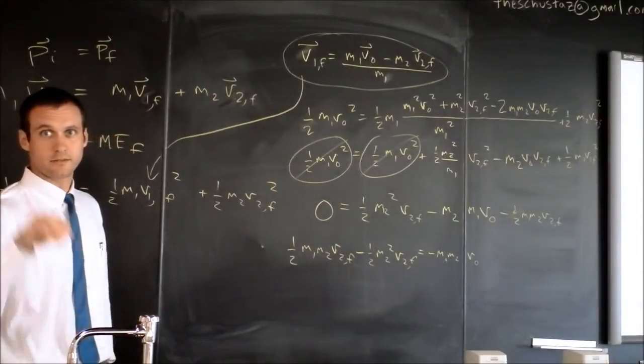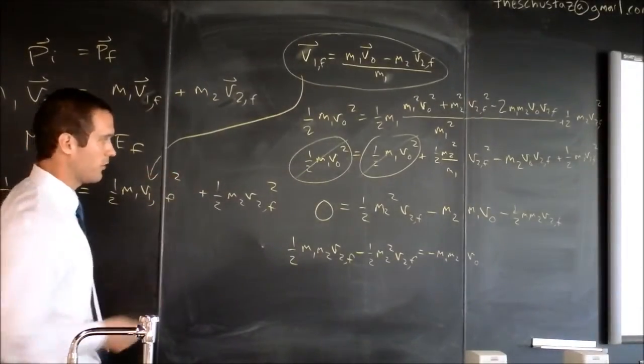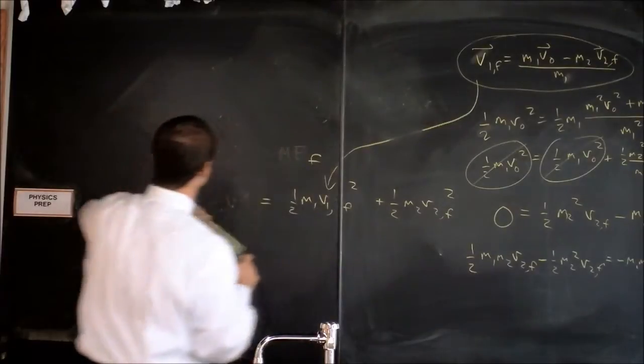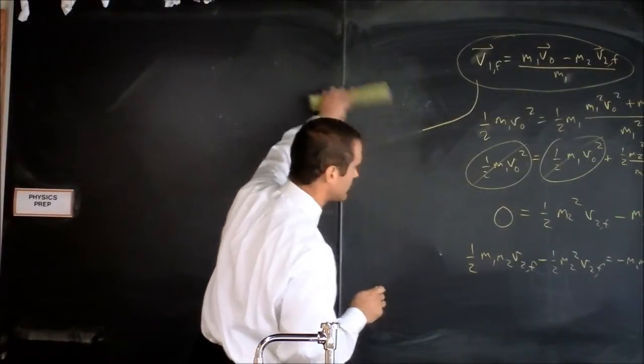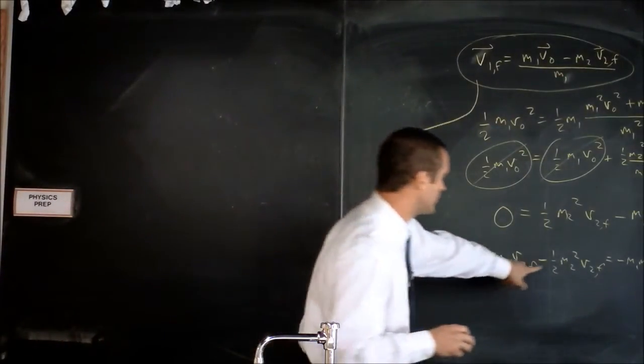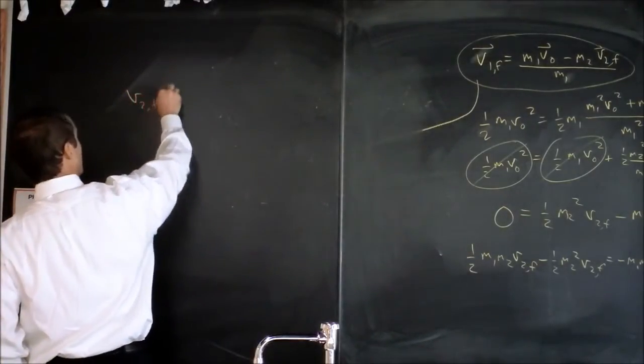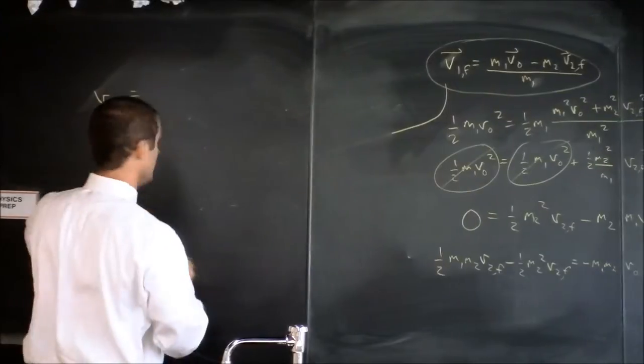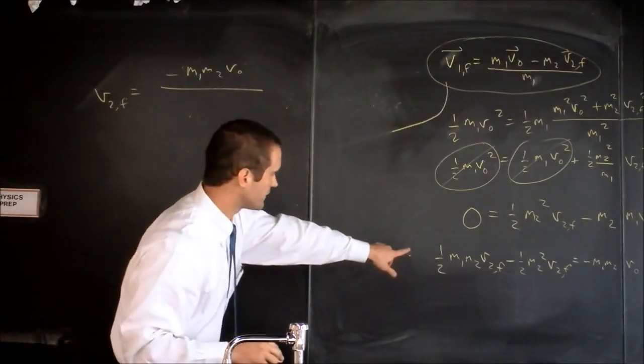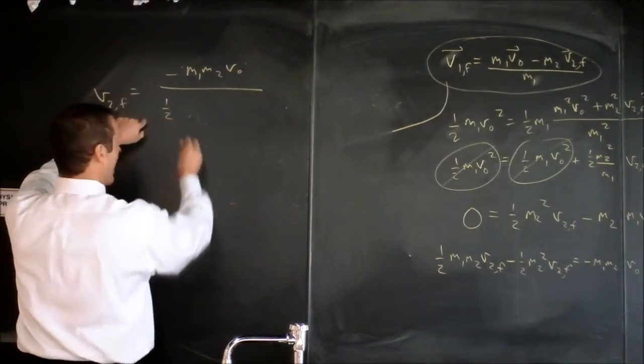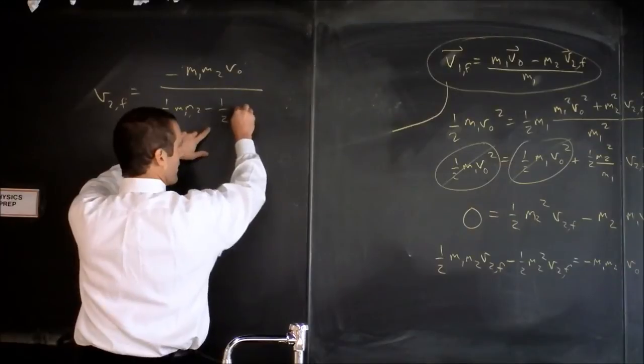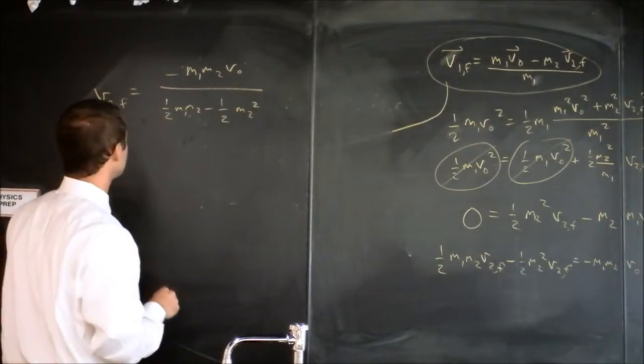We're getting better. This is the conservation of momentum and the conservation of energy together, giving us a relationship for final velocity and initial velocity. So my plan is to factor out V2 final, and I will say V2 final is equal to... We're going to have this stuff on the left side, negative M1 M2 V0 divided by all the stuff that was factored right here. So that's one-half M1 M2 minus one-half M2 square, and that's our answer.